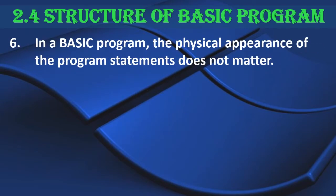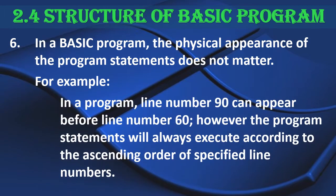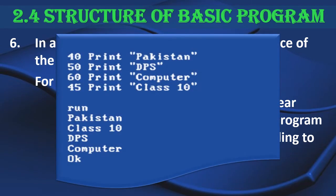The next rule is that in a BASIC program, the physical appearance of the program statements does not matter. For example, line number 90 can appear before line number 60. However, the program statements will always execute according to the ascending order of the specified line numbers. In the example, line numbers 40, 50, 60, and 45 are not given in order, but when executed they run in ascending order.